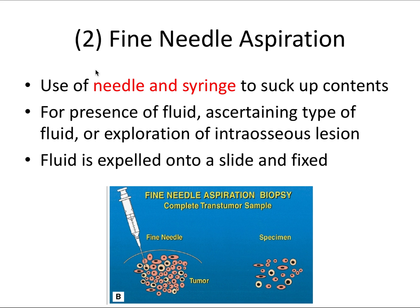Next we have fine needle aspiration. This involves the use of a needle and a syringe to suck up the contents of the lesion, usually an 18-gauge needle on a 5 or 10 milliliter syringe. This is done for the presence of fluid, ascertaining the type of fluid, or exploration of an intraosseous lesion. The fluid is expelled onto a slide and once again fixed.